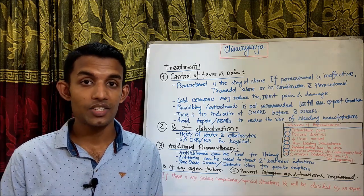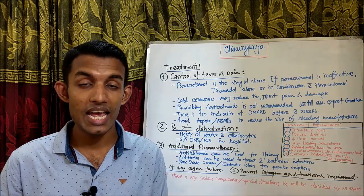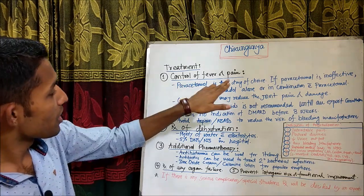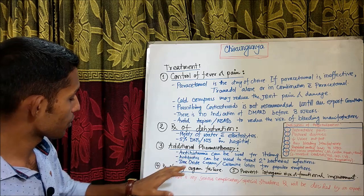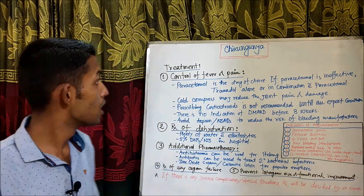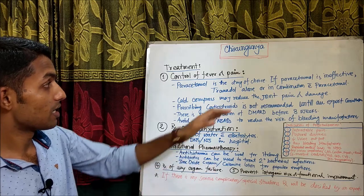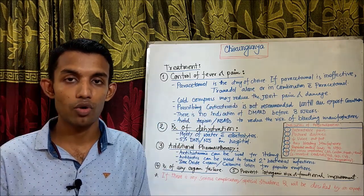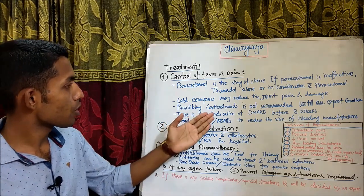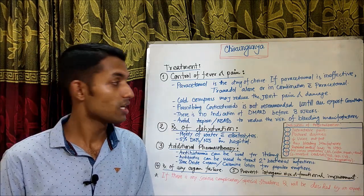For the treatment of Chikungunya, currently there is no antiviral drug or vaccine available. The treatment is entirely symptomatic. The principles are: control of fever and pain, treatment of dehydration, additional pharmacotherapy, treatment of any organ failure, and prevention of iatrogenic risk and functional impairment. Paracetamol is the drug of choice; if ineffective, tramadol alone or in combination with paracetamol can be used. Cold compress may reduce joint pain. Corticosteroids are not recommended without expert consultation, and there is no indication for DMARDs before 8 weeks.